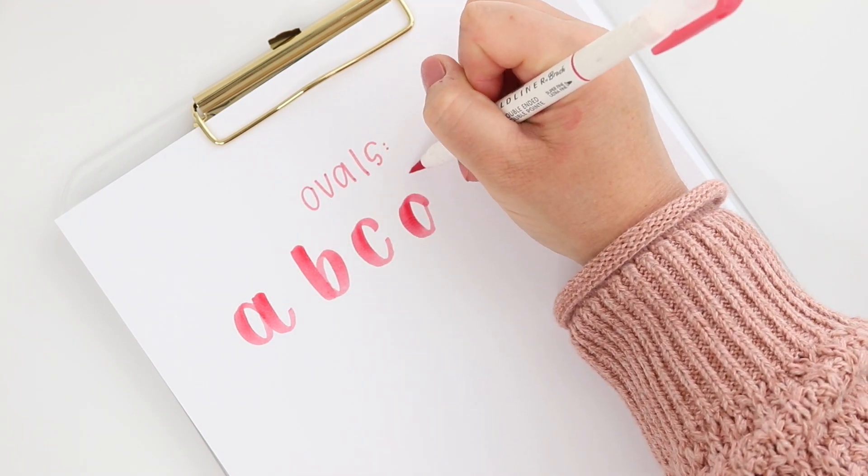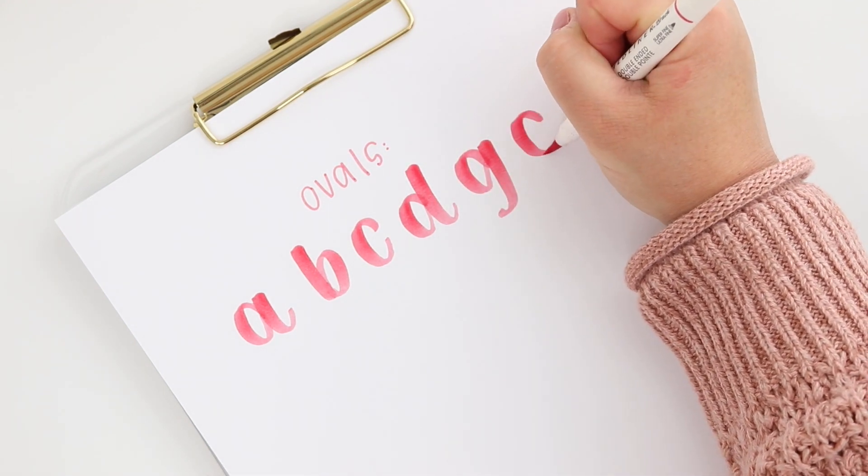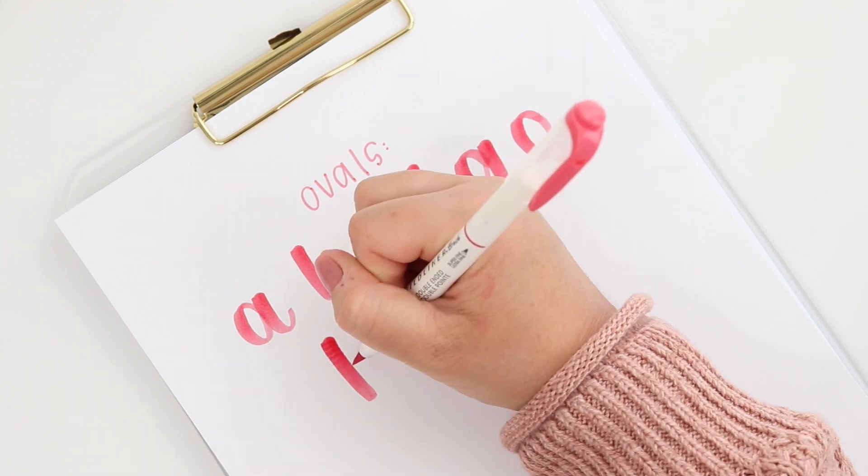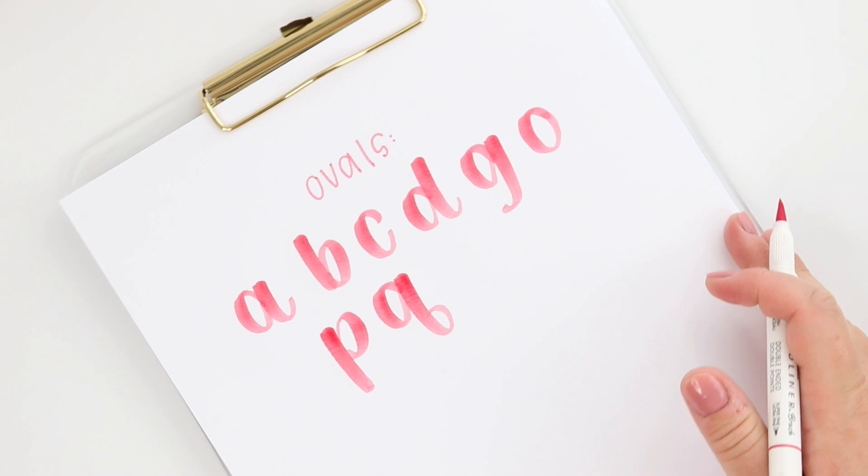Not to mention ovals are in so many of the letters that we draw when we are doing hand lettering. So if you are struggling to draw a nice oval then you are likely struggling to draw a lot of letters like A or D or G and even more than that.